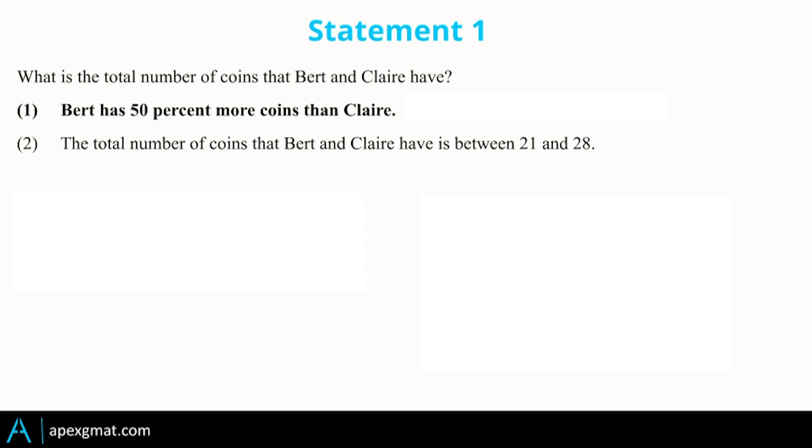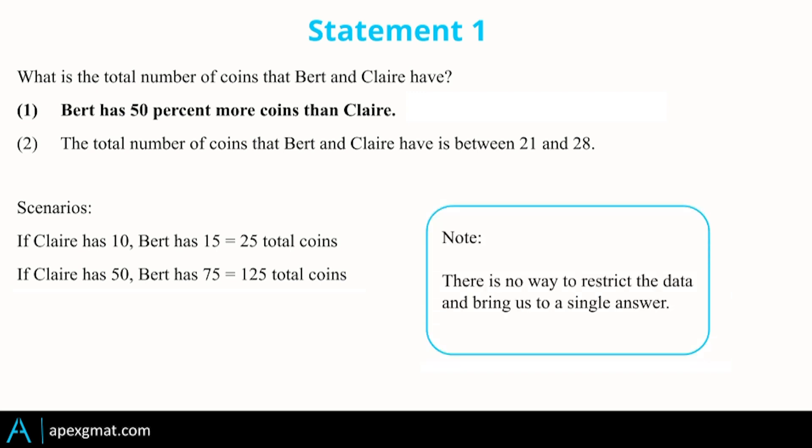If we look at number one, Bert has 50% more than Claire. So if Claire has 10, Bert has 15. If Claire has 50, Bert has 75. 50% more. But that's not enough. Bert and Claire could have any combination of coins. We have no restrictive mechanism to tell us specifically how many Bert has or how many Claire has to bring this into focus and get a single answer.